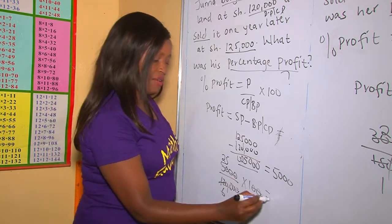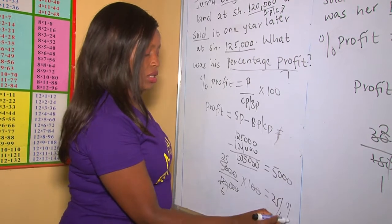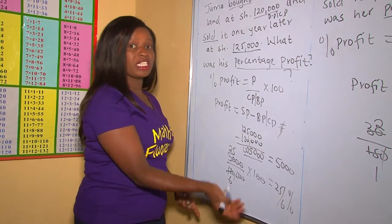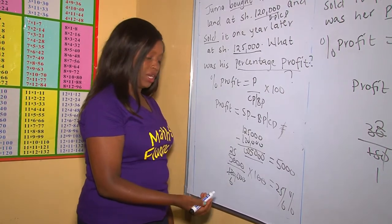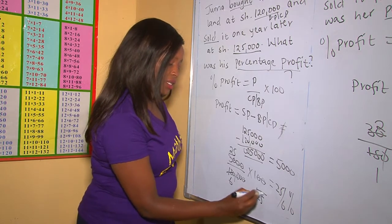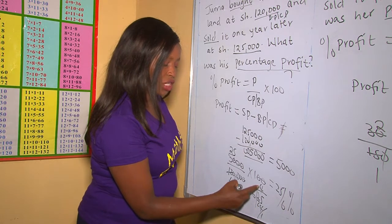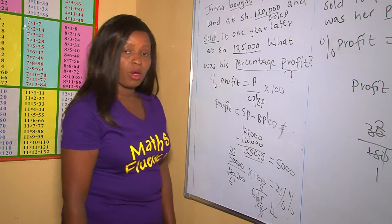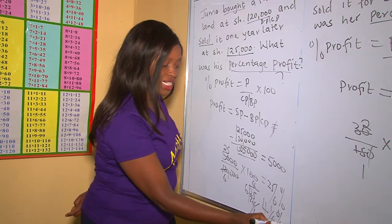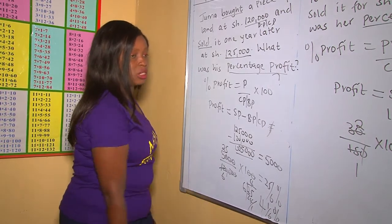We now have 25 over 6. You don't leave your answer as an improper fraction — always convert to a mixed fraction by dividing the numerator by the denominator. 25 divided by 6 is 4 remainder 1. So the answer is 4 and 1/6 percent. This is our percentage profit.